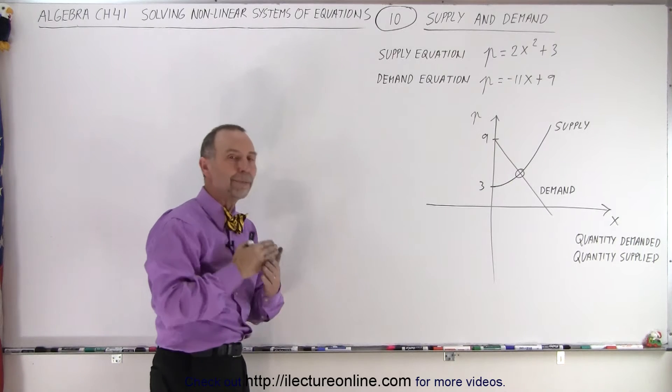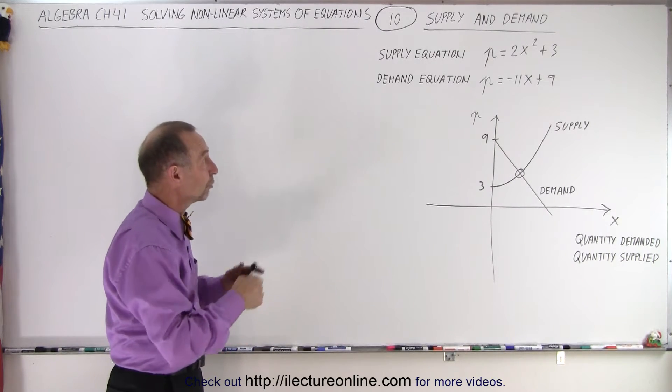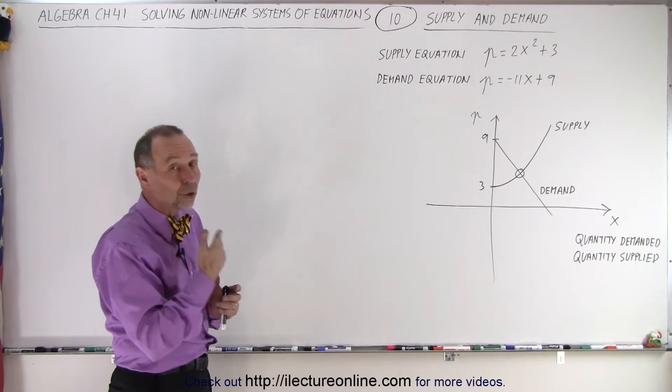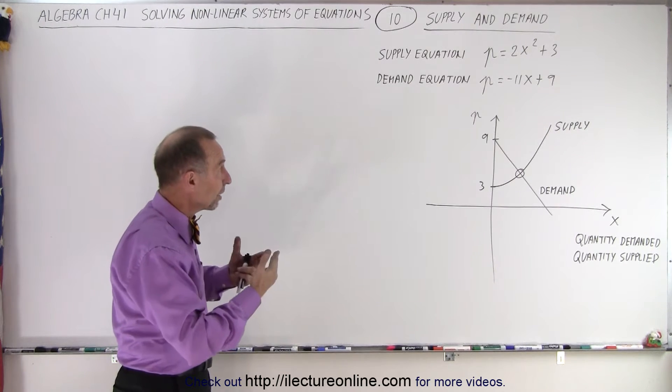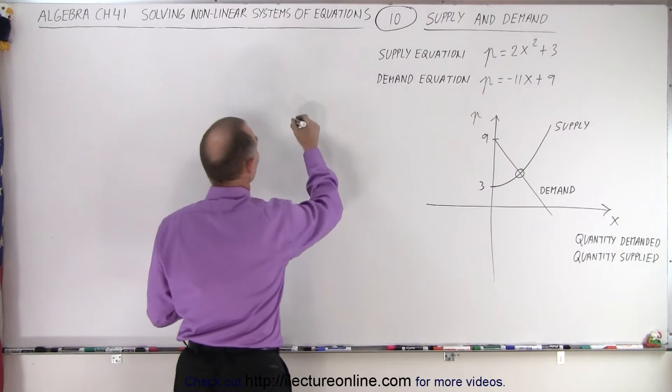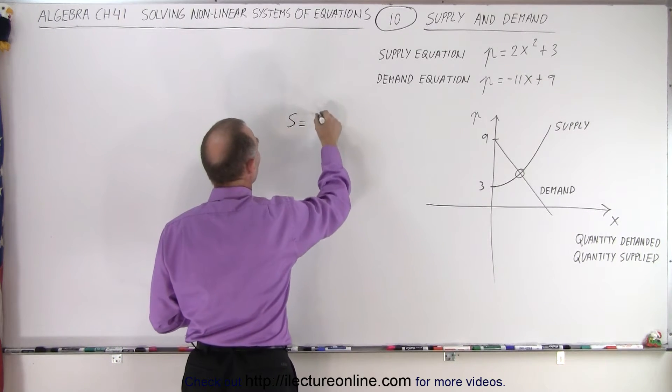So where do they meet? Where do they balance out? Well, we have to solve the two equations simultaneously. So in this case, since both equations are expressed in terms of the price, we can actually set the two equations equal to each other. We can set the supply equation equal to the demand equation.